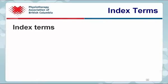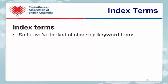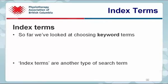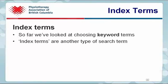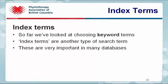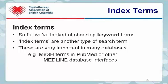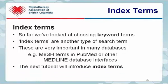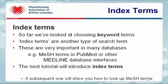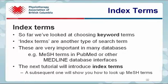Index terms might also be useful. So far, we've looked at choosing keyword terms. Index terms are another type of search term, and these are very important in many databases. For example, MeSH terms are used in PubMed or other MEDLINE database interfaces. The next tutorial will introduce index terms, and a subsequent one will show you how to look up MeSH terms.